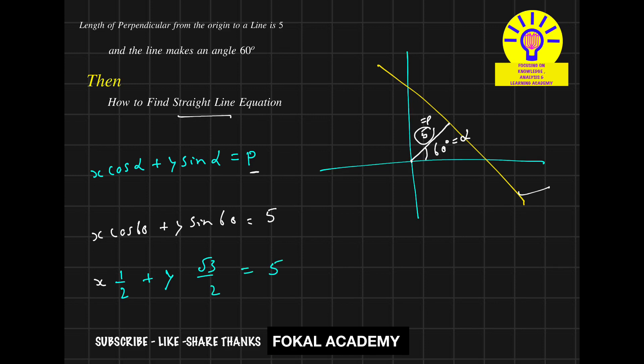So on LHS LCM is 2. So it becomes x plus y into root 3 upon 2 that's equal to 5. Then becomes x plus y into root 3 that's equal to 10. So this is the required straight line equation for the given problem. So this is the line equation.